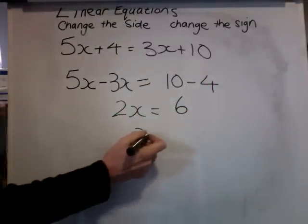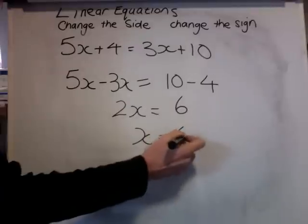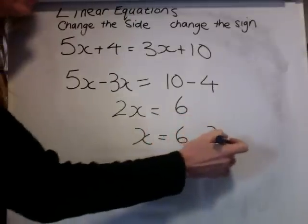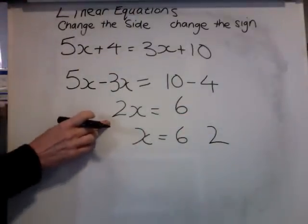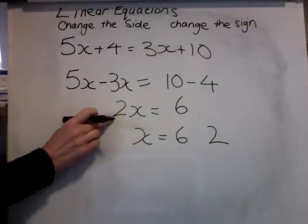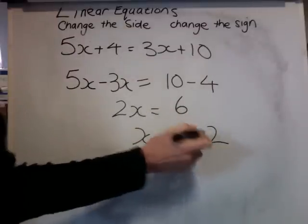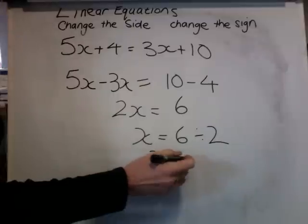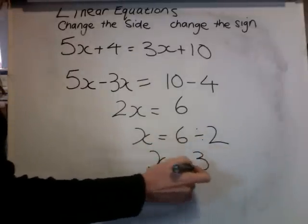I want X on its own, so they can stay the same. With this 2, I'm going to change the side. Change the sign. It was times 2. Now it'll be divided by 2. So X equals 6 divided by 2, which is 3.